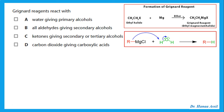The Grignard reagent can be used to add substances to an organic compound. For example, if I react the Grignard reagent — which is RMgCl — with water, what we get is the alkane. Remember: Grignard reagents with water produce the alkanes.